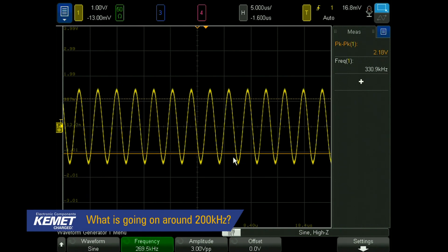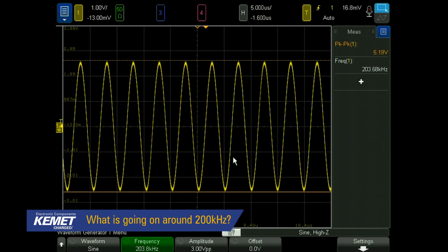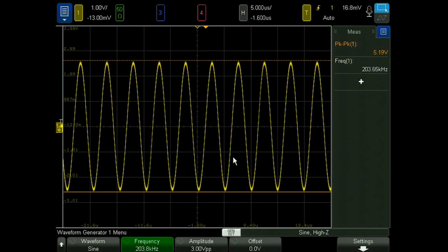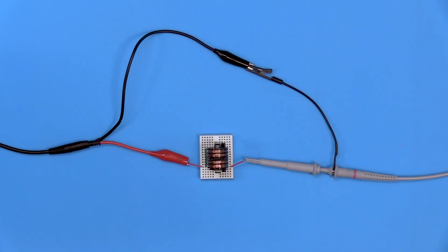So what is going on at this 200 kilohertz range for it to increase beyond its input voltage of 3 volts? There is definitely something wrong with this test setup as we should not be able to see a voltage higher than this.